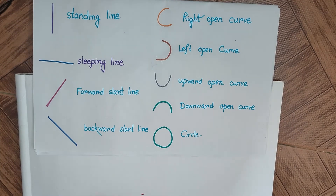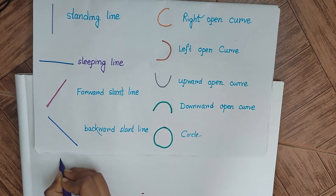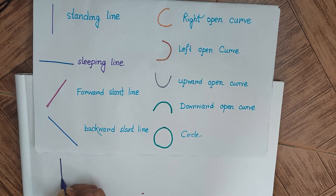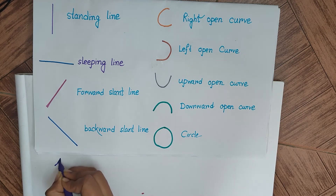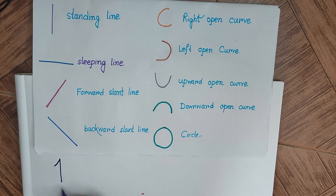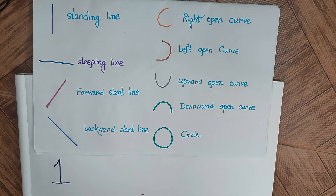First number 1. As you will see, we will be using three kinds of lines while drawing this. First is a standing line, then a small slanting line, and finally at the bottom a slipping line. In this way we can write 1.